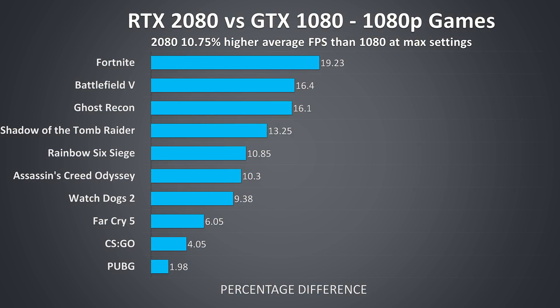In terms of improvement over all 10 games tested at the highest setting preset with a 1080p resolution, on average the RTX 2080 was performing 10.7% better than the GTX 1080 in terms of average FPS. There was an improvement in every title tested, though as we can see it really does vary between games.